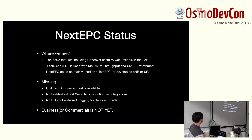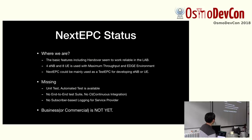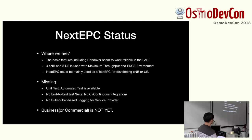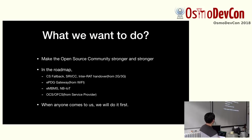NextEPC status: we are mainly working on aging experiments for three or four days and are currently operating reliably in the lab with one eNodeB and eight UEs. Maximum throughput is tested at the edge environment. NextEPC could be mainly used as a test EPC for developers — eNodeB or UE developers. Unit test and automated test are available, but there is no end-to-end test and no CI, and no subscriber-based logging for service providers.